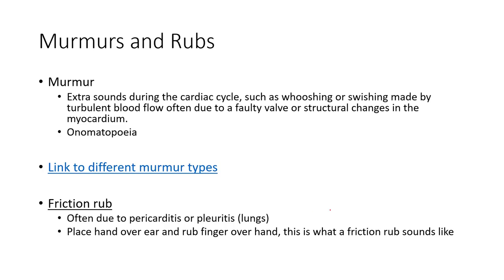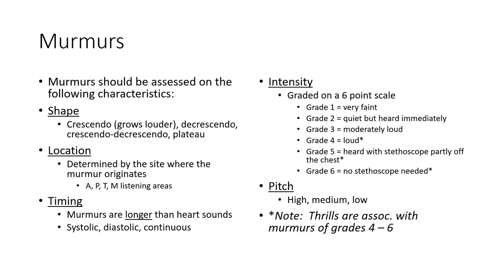Murmurs - they are onomatopoeias. They're extra sounds that occur during the cardiac cycle, like a whooshing or squishing due to turbulent flow, often as a result of a faulty valve. We also talked about friction rubs, which are often due to pericarditis. When classifying a murmur, it should be characterized over its shape - does it crescendo? Does it decrescendo? Does it crescendo-decrescendo? Is it plateaued? Where do we hear it the best - over the aortic, pulmonic, tricuspid, and mitral regions? We should be listening to all of them and we'll hear the murmur in every region, just more pronounced in different regions.